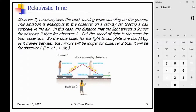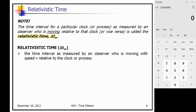Observer 2 will have a different measurement of time, and because the distance traveled is longer, their measurement will be greater than the proper time. We call this relativistic time: the time interval for a particular clock or process as measured by an observer who is moving relative to that clock. Even though observer 2 is stationary, we can consider them as moving relative to the clock's frame.